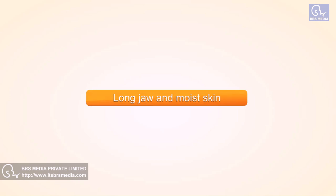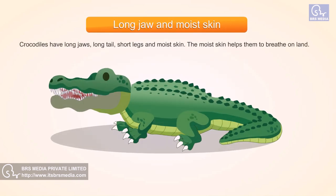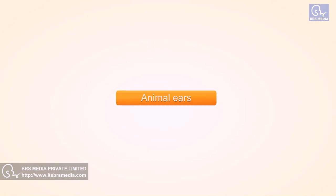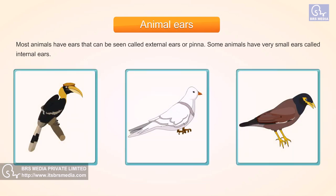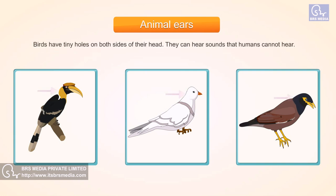Crocodiles have long jaws, a long tail, short legs, and moist skin. The moist skin helps them to breathe on land. Animal Ears. Most animals have ears that can be seen, called external ears or pinna. Some animals have very small internal ears. Birds have tiny holes on both sides of their head and can hear sounds that humans cannot hear.